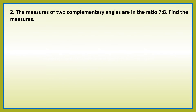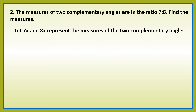Problem number 2: the measures of the two complementary angles are in the ratio 7 is to 8. Find the measures. Let 7x and 8x represent measures of the two complementary angles. Let us get the sum: 7x plus 8x. Equate this to 90, kasi ang pinag-uusapan na natin dito ay complementary angles. The sum of the two angles is 90 degrees.